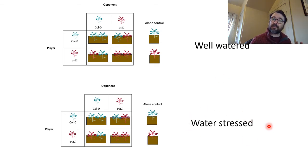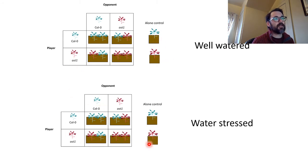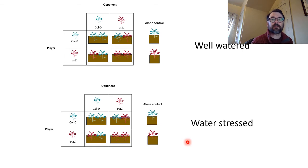We crossed this design with watering treatment — some kept well-watered and some water-stressed — and organized everything in a randomized block design like we've talked about in lab before. Each group would get these two sets of plants, mixed up in that randomized block design.